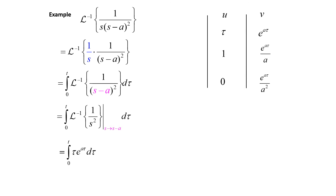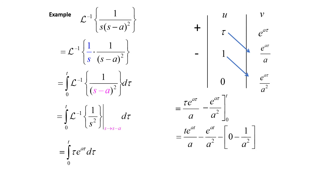We alternate between addition and subtraction and multiply diagonally. The first term is tau times e to the a tau over a, and then we subtract e to the a tau over a squared. Evaluating at the limits from 0 to t: plugging in t gives t e to the at over a minus e to the at over a squared, and subtracting the value at 0 gives minus 0 minus 1 over a squared. Simplifying, the negatives become positive, giving us t e to the at over a minus e to the at over a squared plus 1 over a squared.